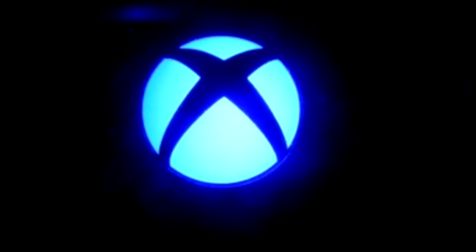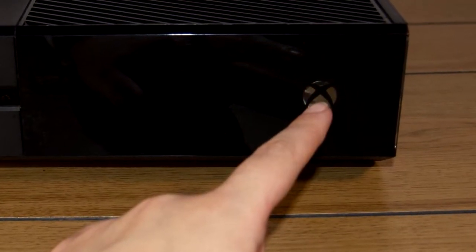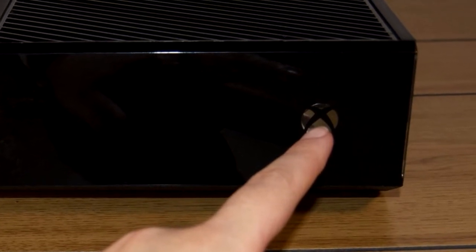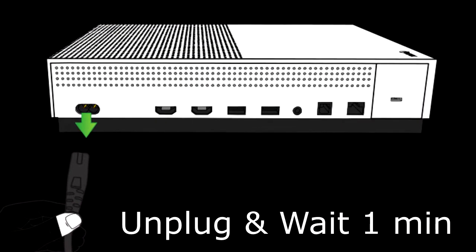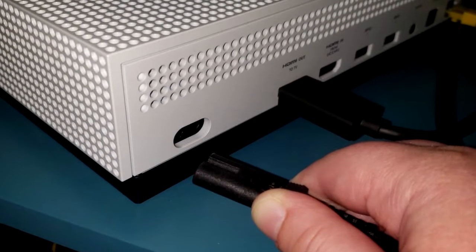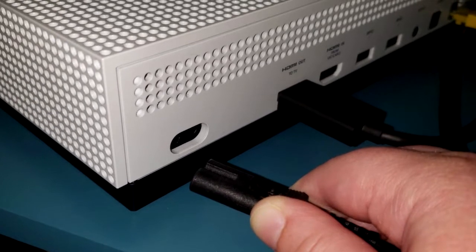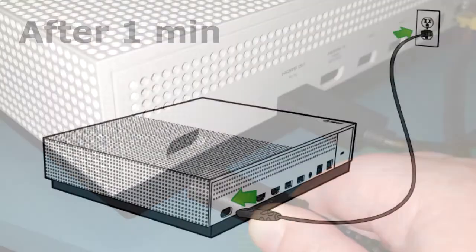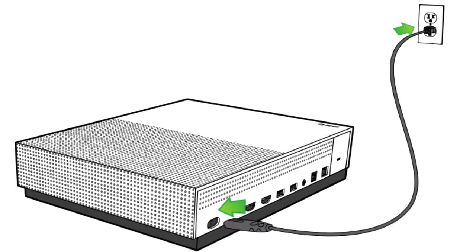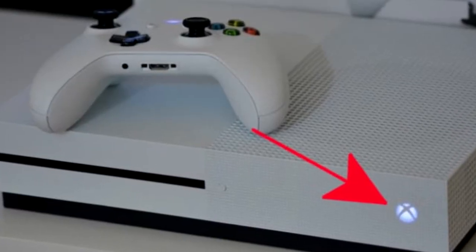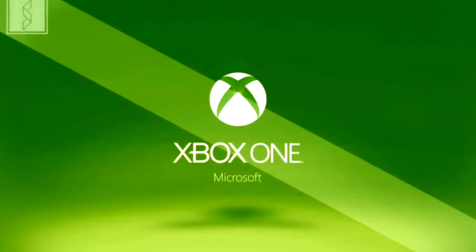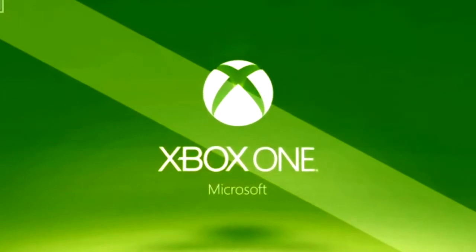This will allow you to perform a hard reset. After your console shuts down, let go of the power button and wait for at least one minute before starting your console again. While it's off, go ahead and unplug all the cables — the power cord, the internet cord, and the HDMI from your Xbox One — then plug them back in after the minute. Once you've done this, press the power button to turn your console back on, and it should start up like it normally would.